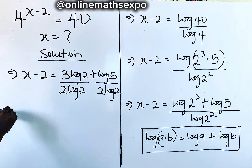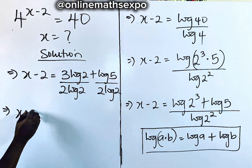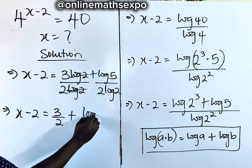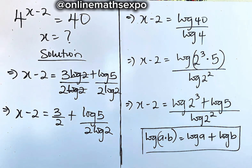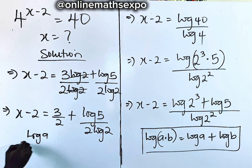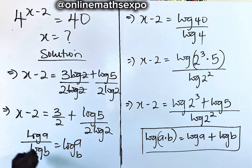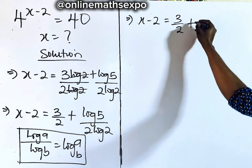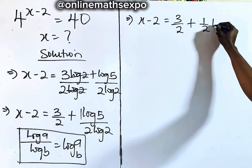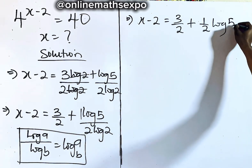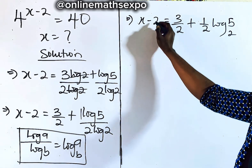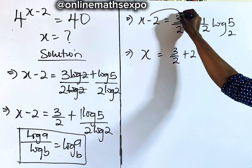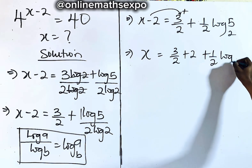So we have x minus 2 is equal to 3 log 2 plus log 5, divided by 2 log 2. We can divide each term in the numerator by 2 log 2. These cancel to give 3 on 2. Then, remember for every log a divided by log b, it's always log a base b — so the remaining term gives us half of log 5 base 2. Therefore x minus 2 equals 3/2 plus (1/2) log₂5.